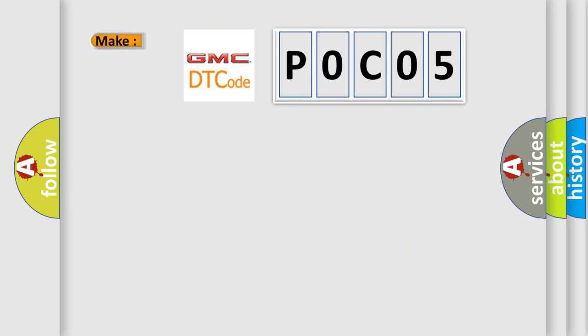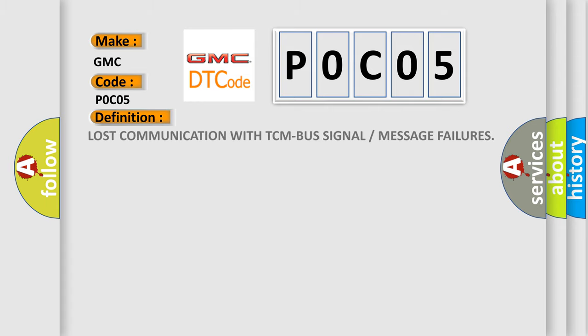So, what does the diagnostic trouble code P0C05 interpret specifically for GMC car manufacturers? The basic definition is lost communication with TCM bus signal or message failures.